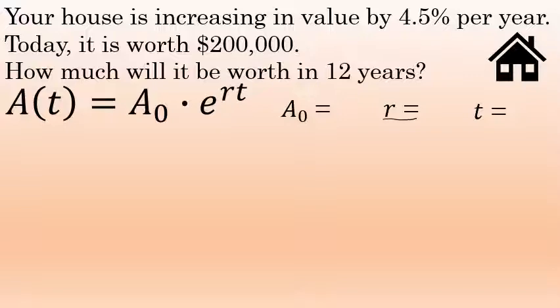The initial value, A sub zero, is basically your starting point. And so in this case, the house is worth today $200,000. So A sub zero will be 200,000.